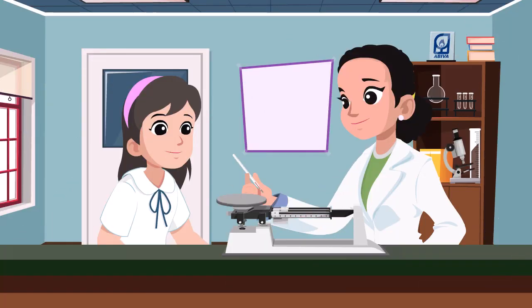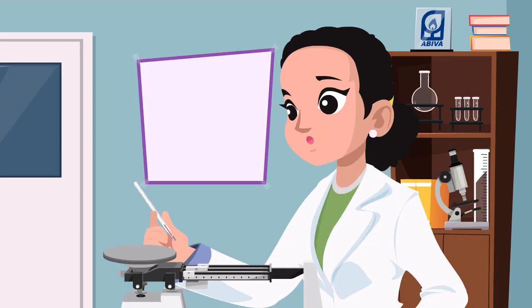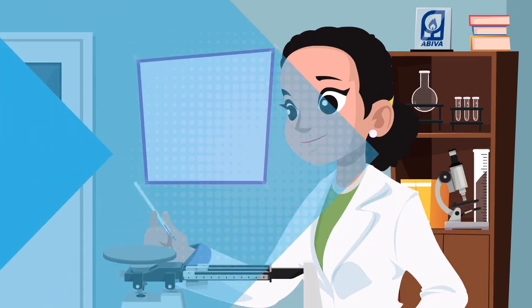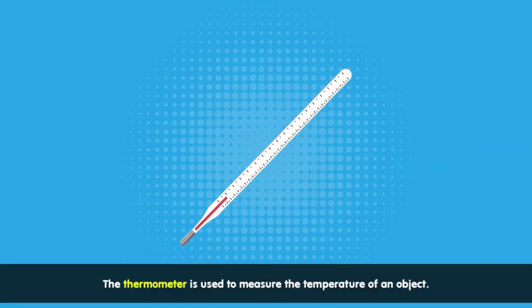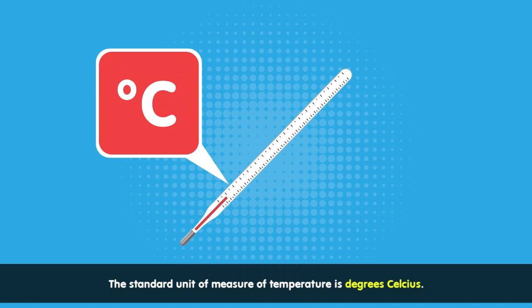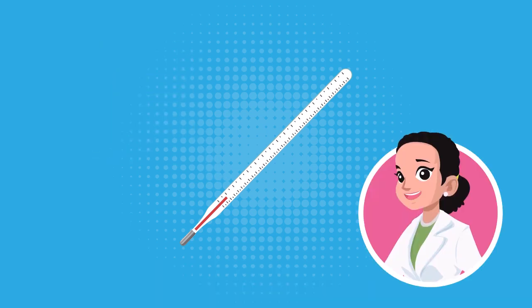Teacher Anne introduces another instrument the student recognizes — a thermometer. The student, Ellie, explains it is used to measure the temperature of an object, and that degrees Celsius is the base unit of temperature. Teacher Anne praises Ellie, saying she could be a scientist someday.